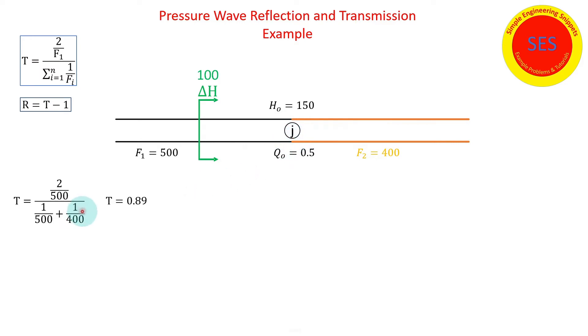So that will have an impact on the transmitted wave and reflective wave back up pipe one. Using our previously determined calculations we determined that the transmission factor is 0.89, so this 100 foot incoming wave is going to come in, interact with this junction, and 89 of that is going to travel down through pipe two. The reflection factor is minus 0.11 and so there's going to be a minus 11 wave traveling upstream back up pipe number one.